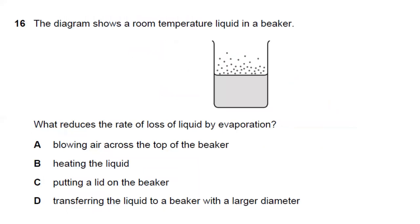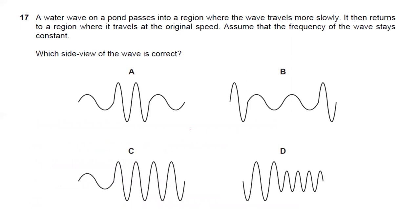Question sixteen: which action reduces the rate of evaporation of a liquid in a beaker? Blowing air across the top increases evaporation. Heating increases evaporation. Putting a lid on the beaker stops molecules from escaping, so it decreases the rate of evaporation. Transferring to a larger diameter beaker increases evaporation. Answer C is the right choice.